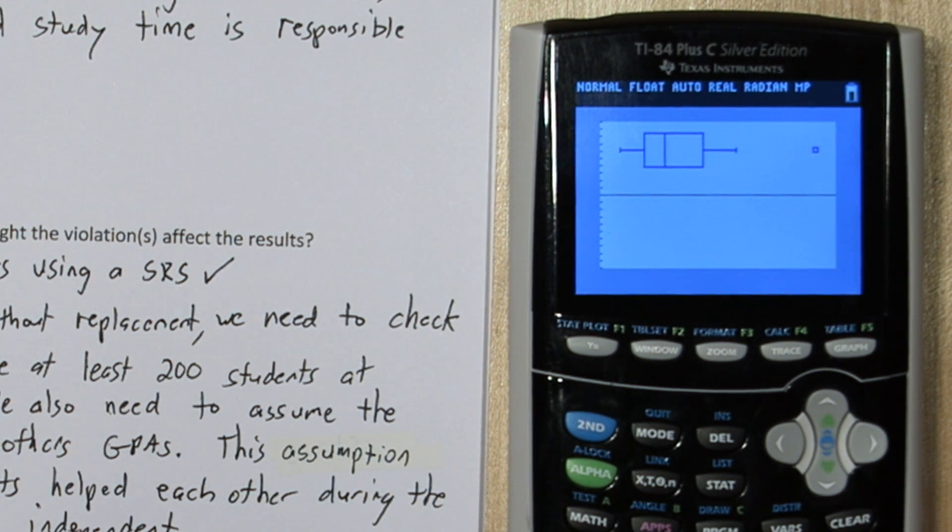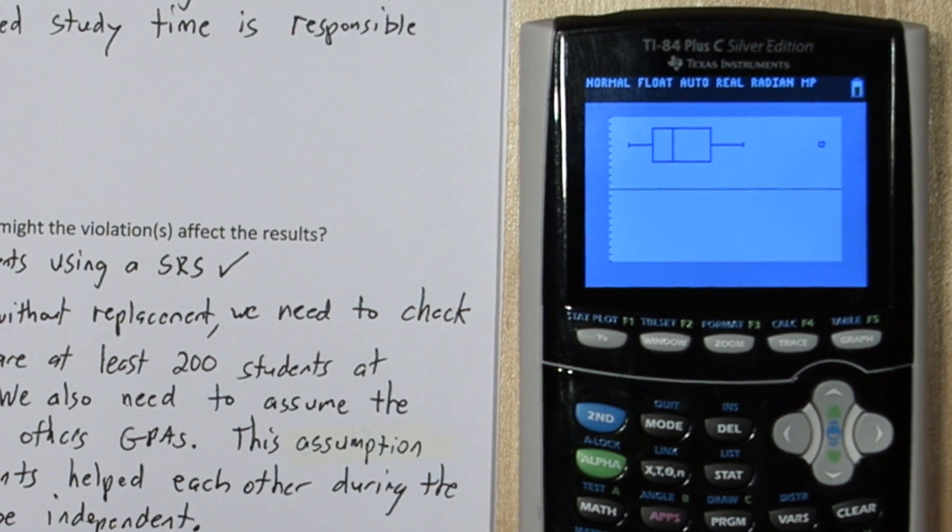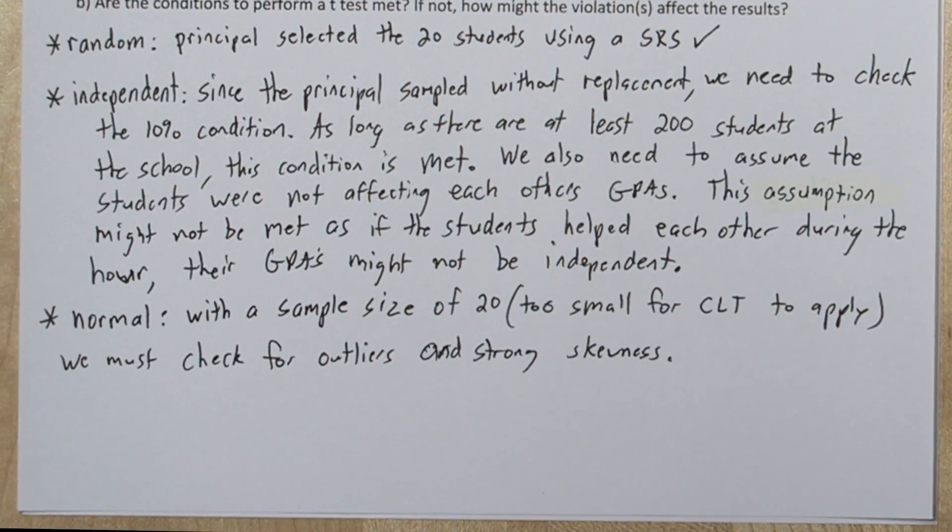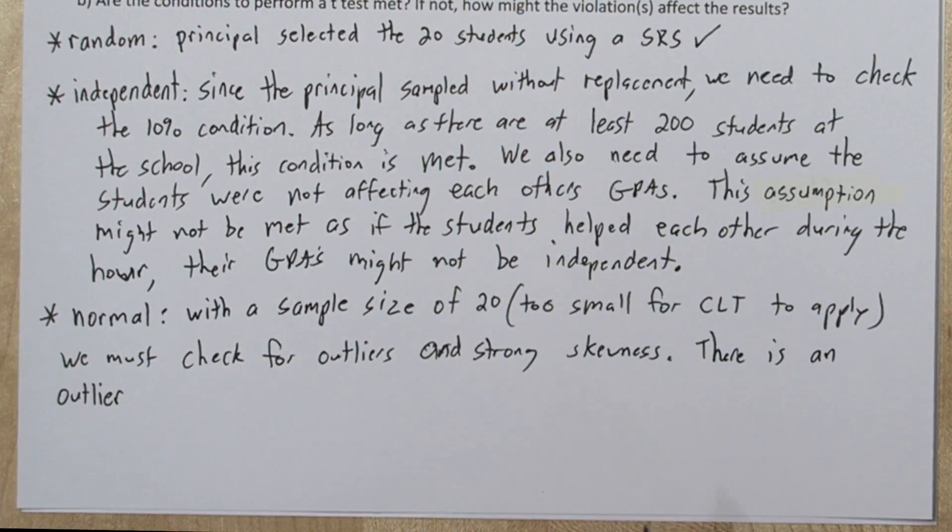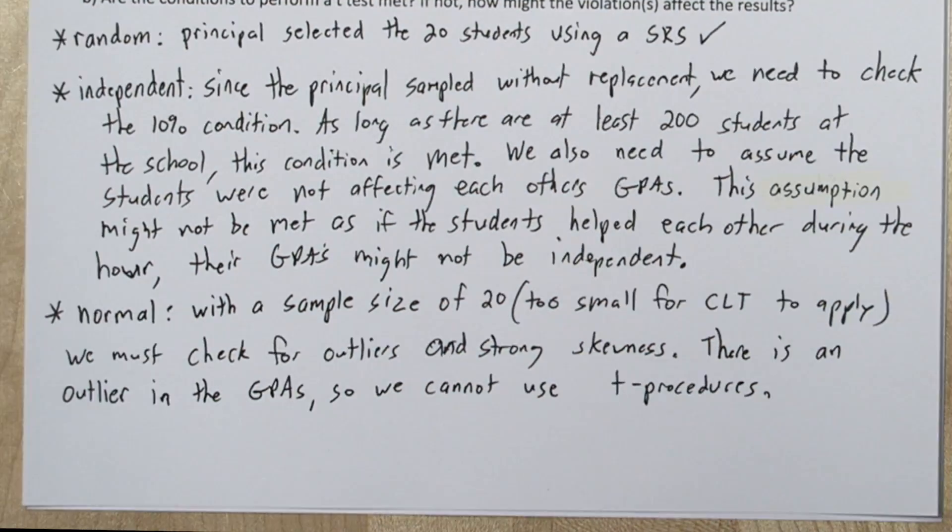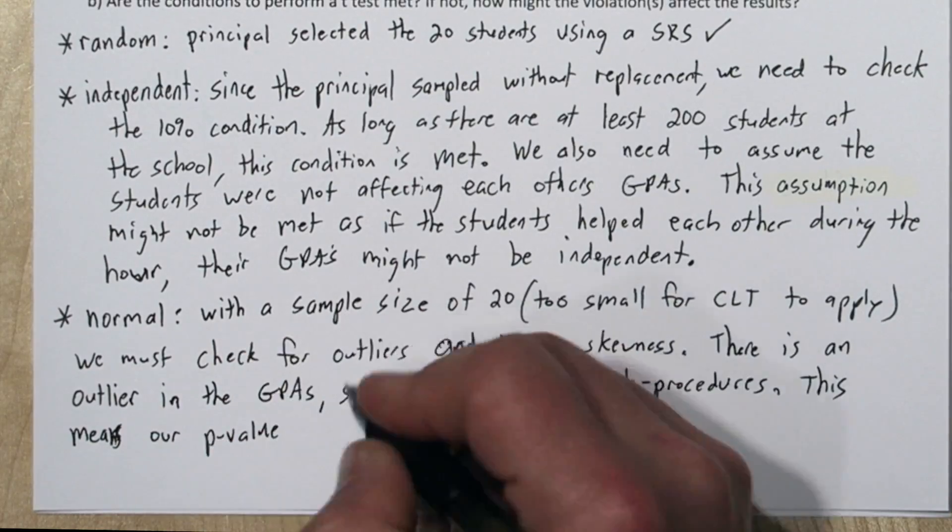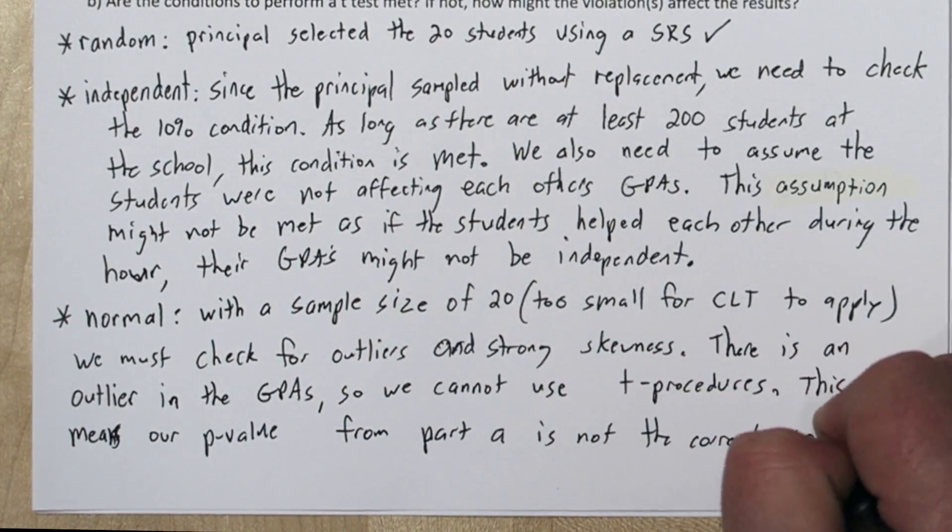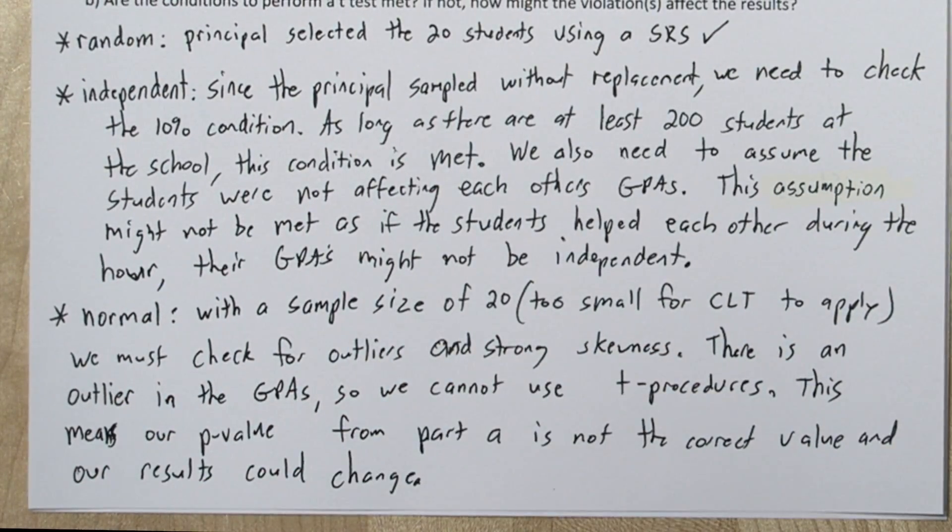It's the wrong p-value. So, depending on what the true p-value is, our results might not be significant anymore. We'll say there's an outlier in the GPAs, so we cannot use T procedures. This means our p-value from part A is not the correct p-value, and our results could change.